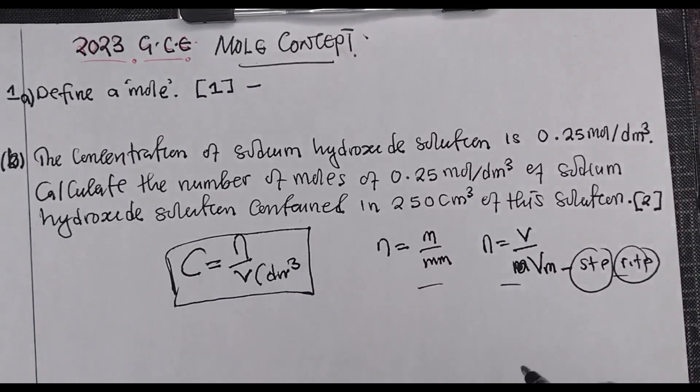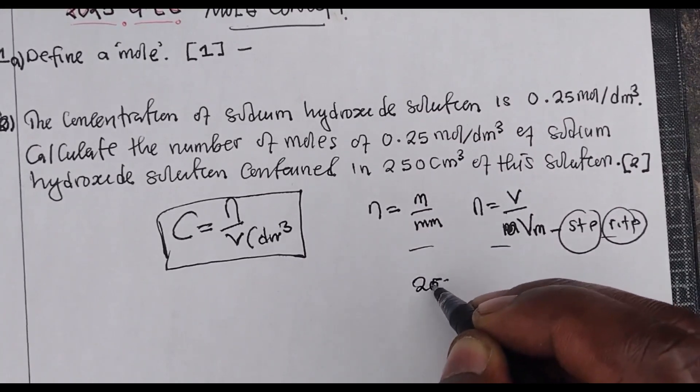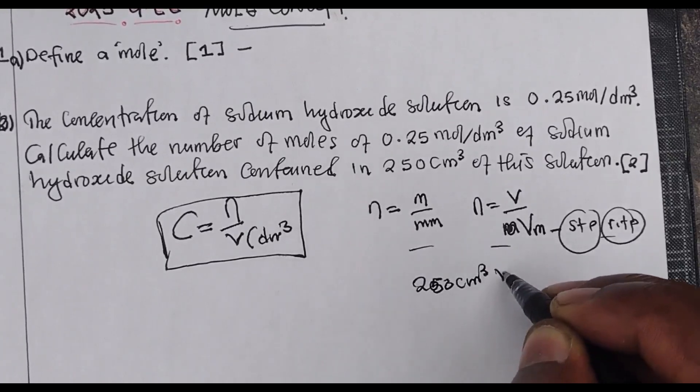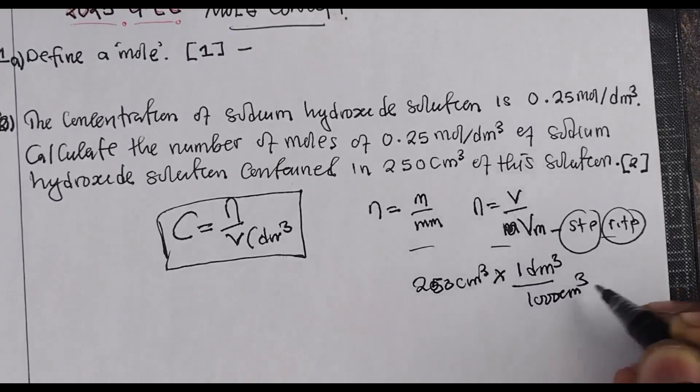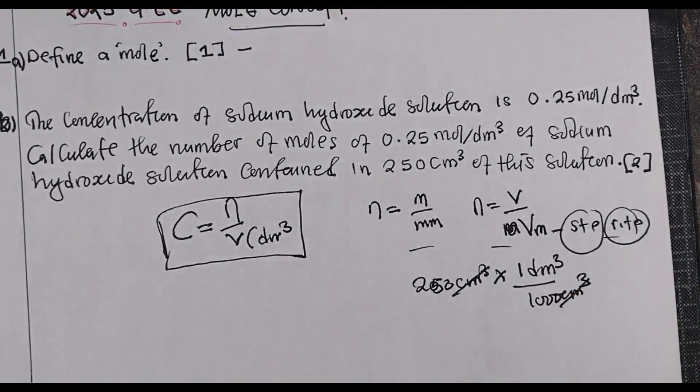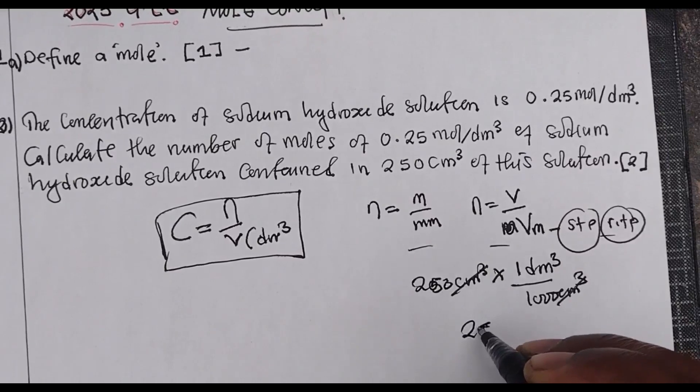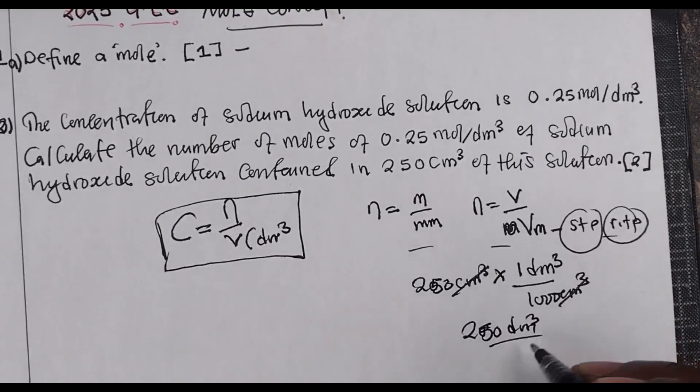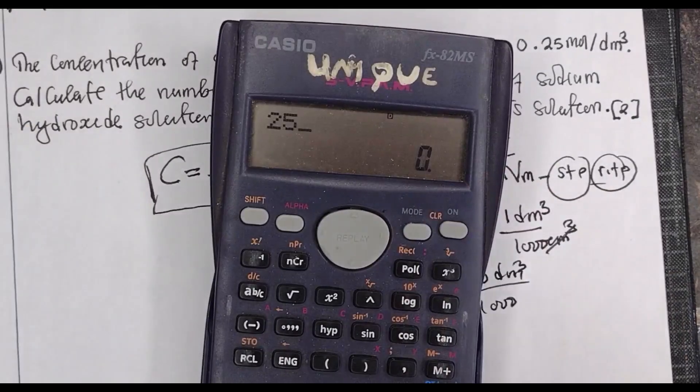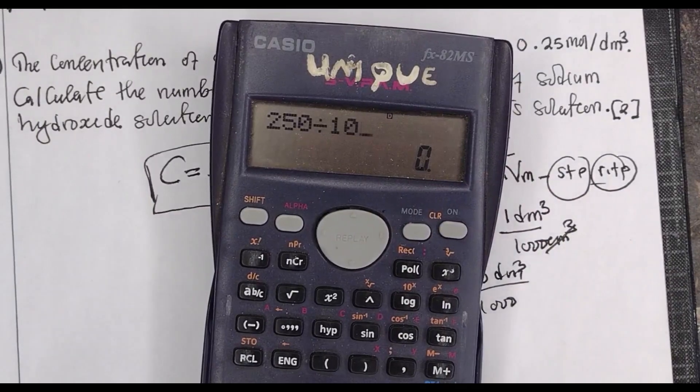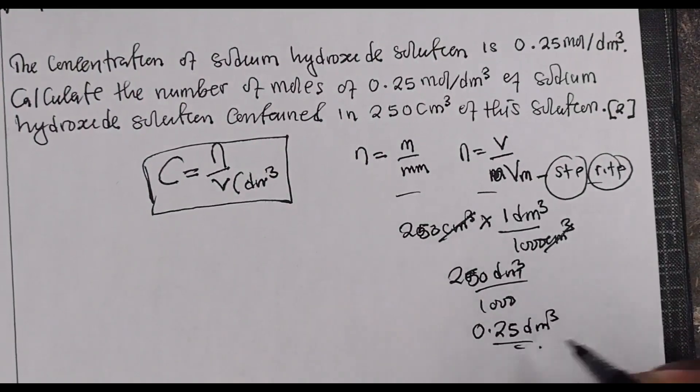So what is our concentration? Before we do the concentration, let us start by converting the volume into decimeter cubed. So 250 cm³ multiplied by one dm³ is equivalent to 1000 cm³. This will cancel, and therefore we have 250 divided by 1000, which gives us 0.25 dm³. So that is your volume.